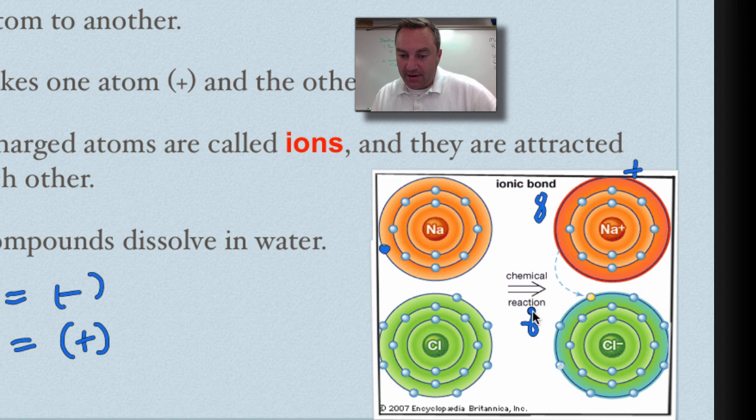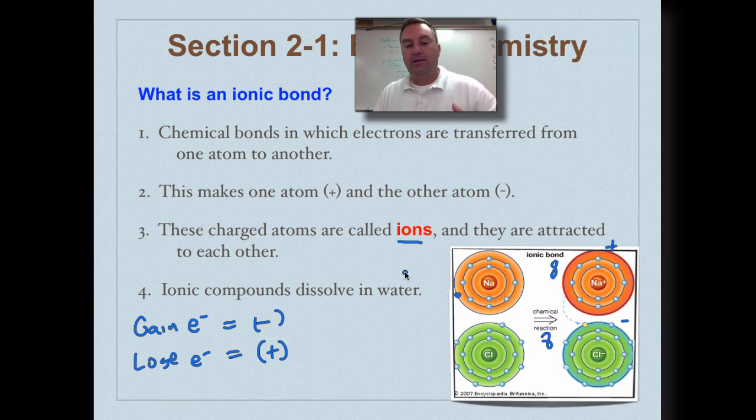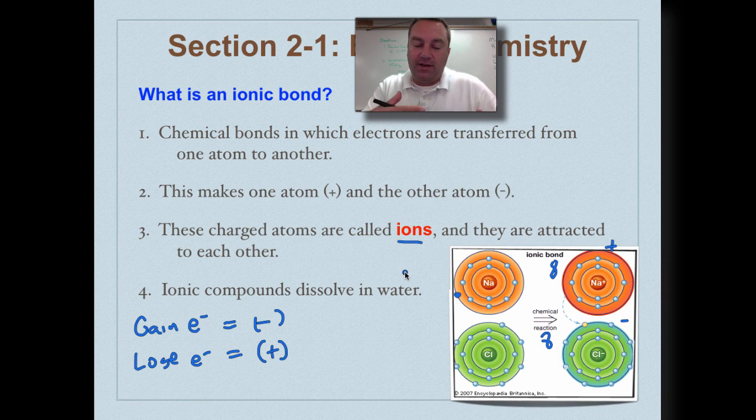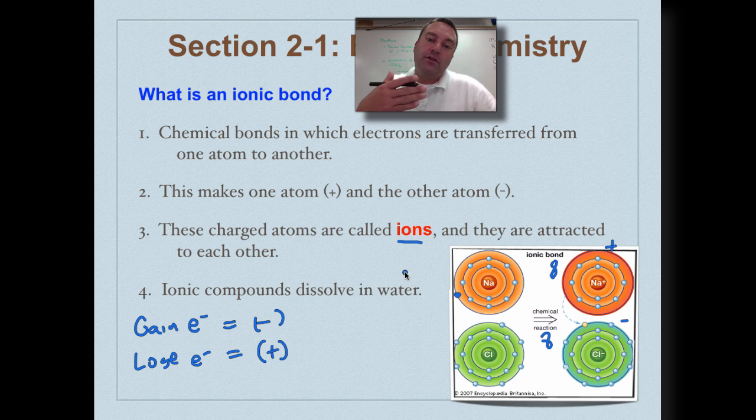Chlorine now has eight on its outer shell, but it gained one. So now that it has a negative charge, negative one because it gained one electron, so what we have is positive, negative, they join together, an ionic bond. Now, this charged atom of sodium is called an ion. This is a charged atom. In other words, it has an extra electron or it's missing electrons. This would be a positive ion, this would be a negative ion, opposites attract.